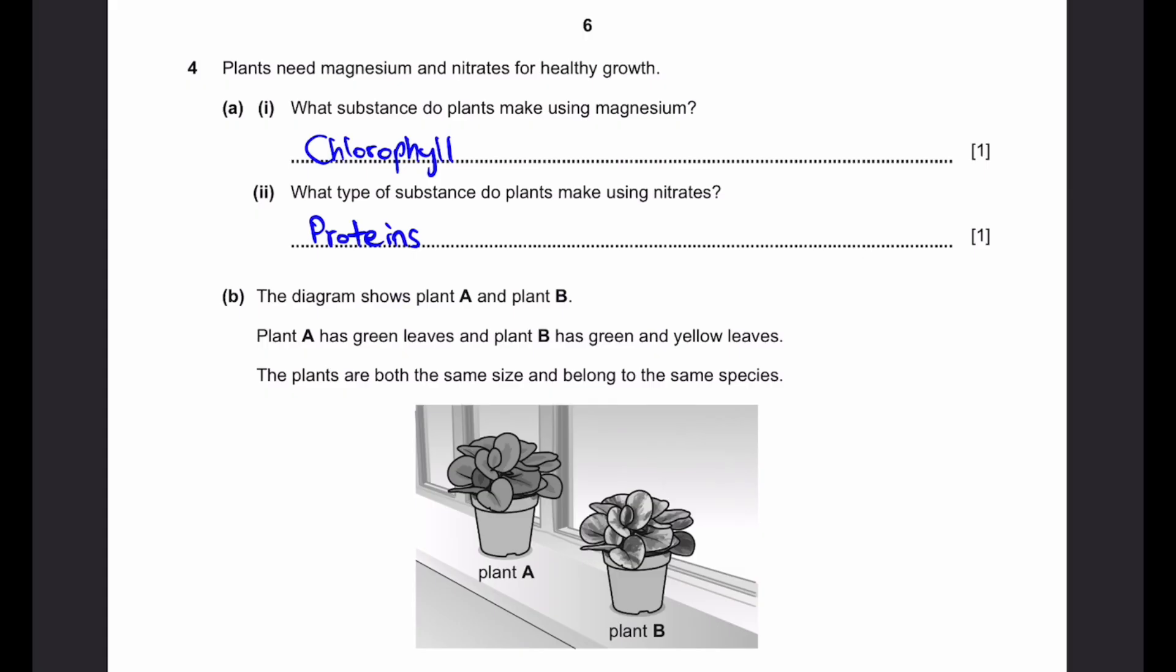Question 4. Plants need magnesium and nitrates for how they grow. The answer is simply chlorophyll. Part 2: What type of substance do plants make using nitrates? The answer is proteins. You can also write amino acids or peptides. These are technically higher level vocabulary expected for IGCSE, but proteins is enough to get the full mark here in stage 9.